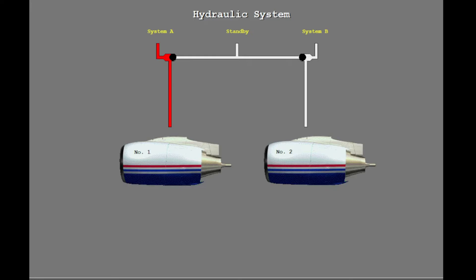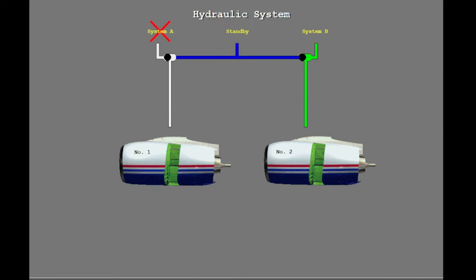For normal operation, engine number one thrust reverser uses hydraulic system A pressure, and engine number two thrust reverser uses hydraulic system B pressure. If there is a failure of hydraulic system A or B, the standby hydraulic system is the emergency source of pressure for the two thrust reverser systems. In this example, hydraulic system A failed.